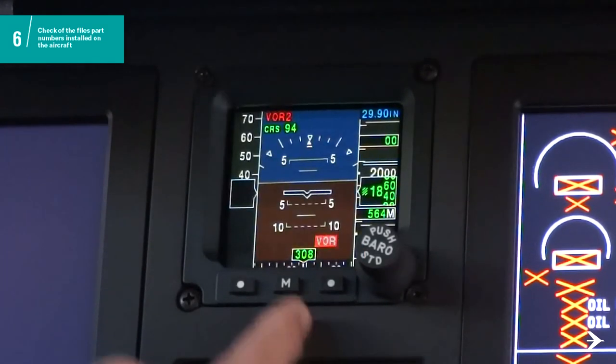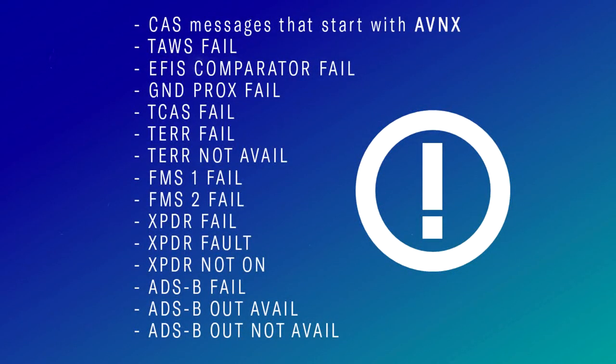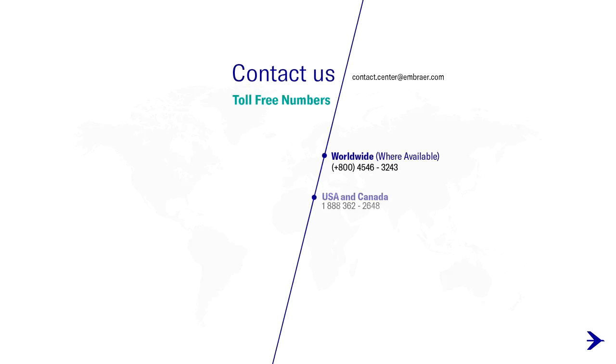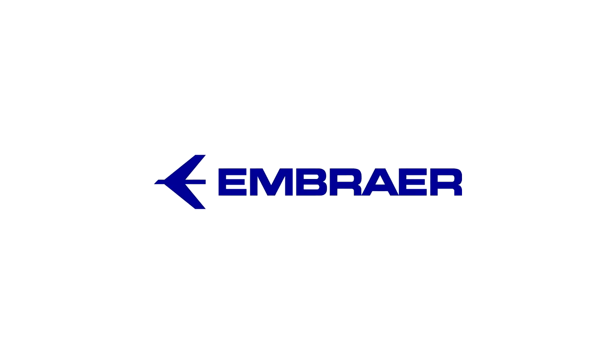After 10 seconds, the SFIS shows Normal Screen. Make sure the relevant messages are not shown on the CAS window. Do all the tests applicable to your aircraft. Remove from the work area all tools, equipment, and material that you used, and fill out the service bulletin implementation and evaluation. Thank you for listening.